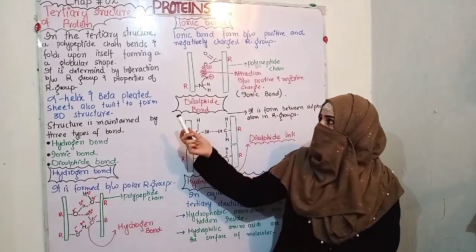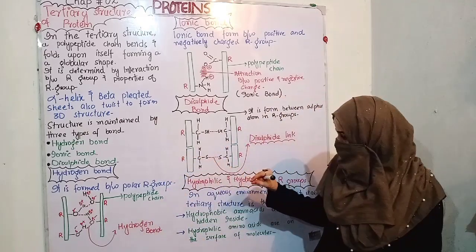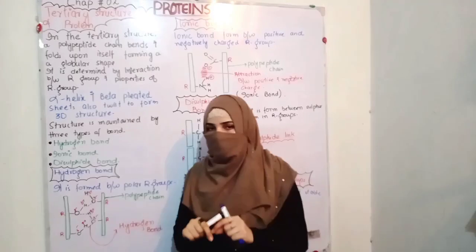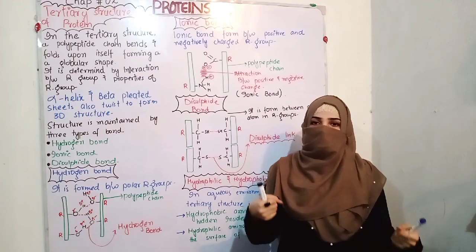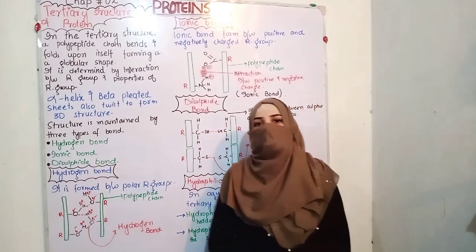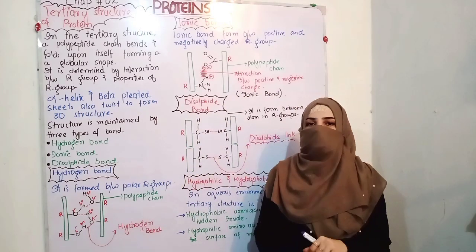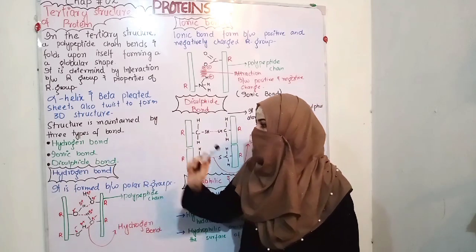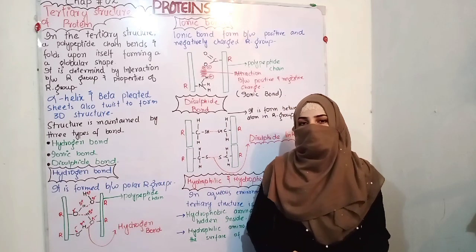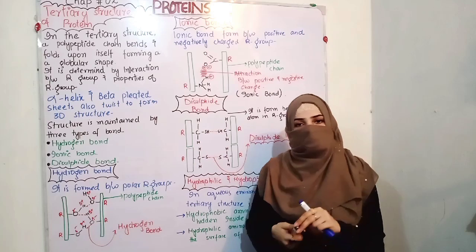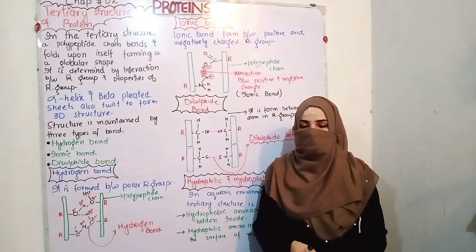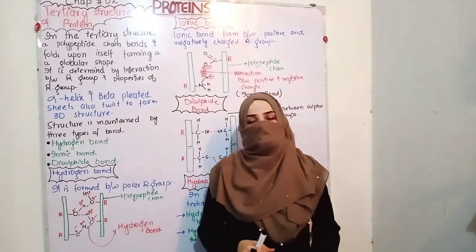This was the explanation of the tertiary structure. Now for the quaternary structure: when multiple tertiary structures are aggregated together, they form a highly complex structure called the quaternary structure. The best example of quaternary structure is hemoglobin.